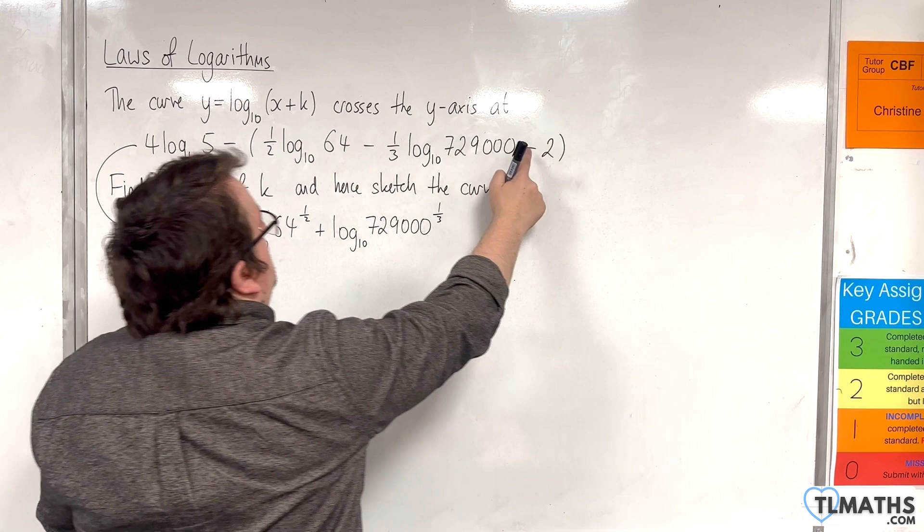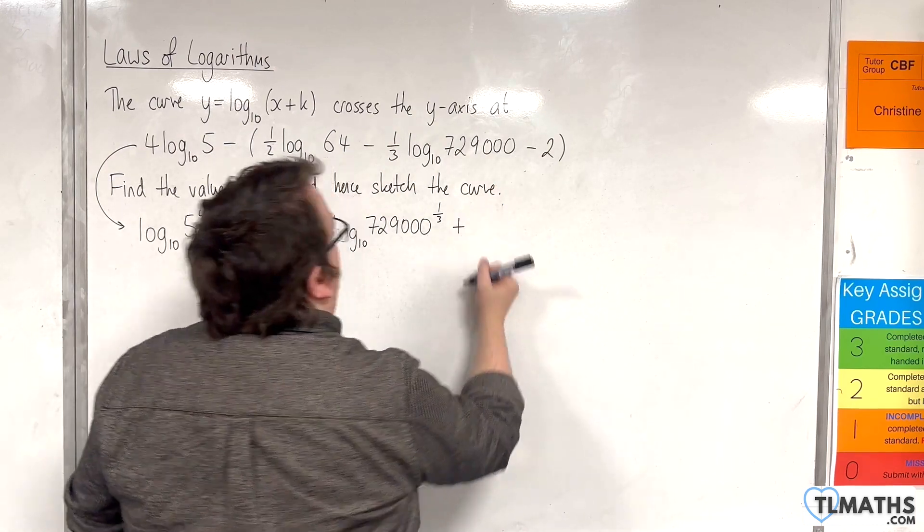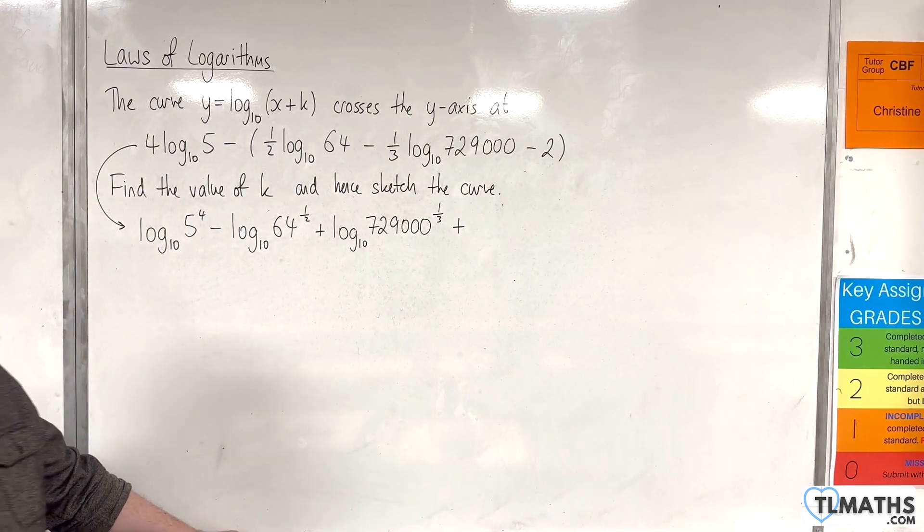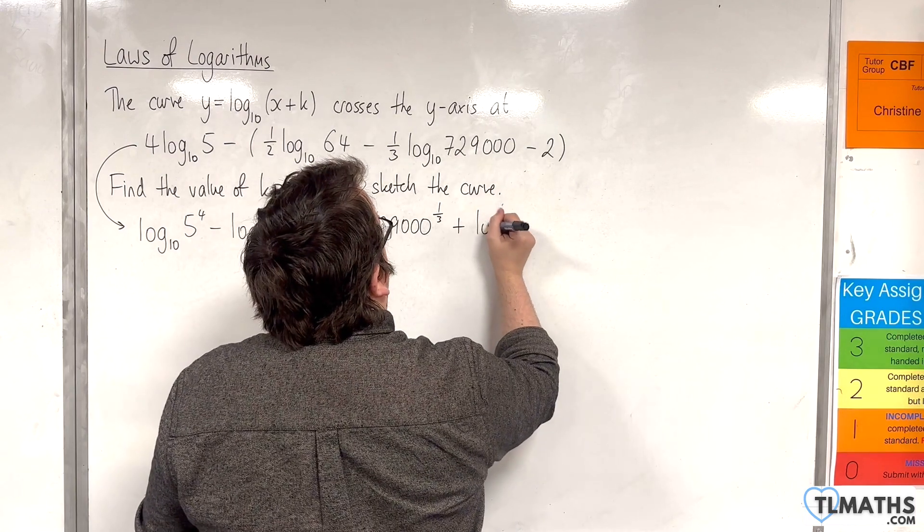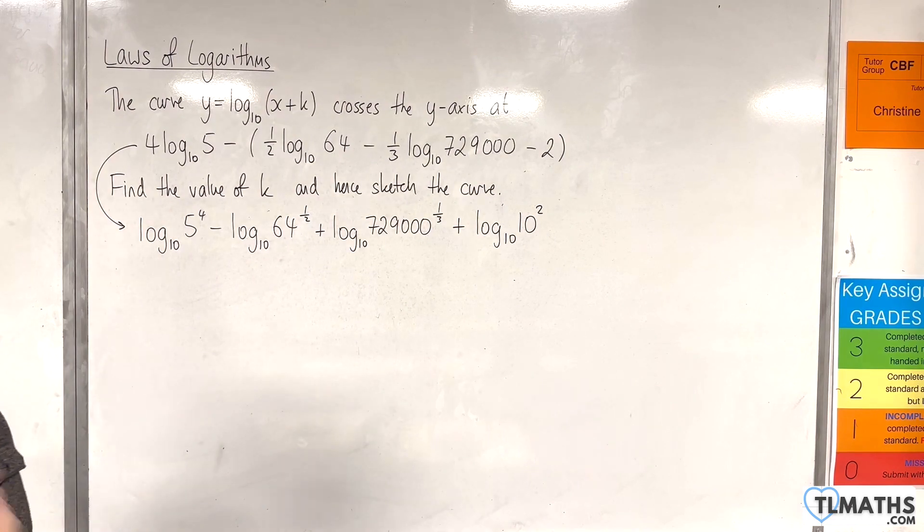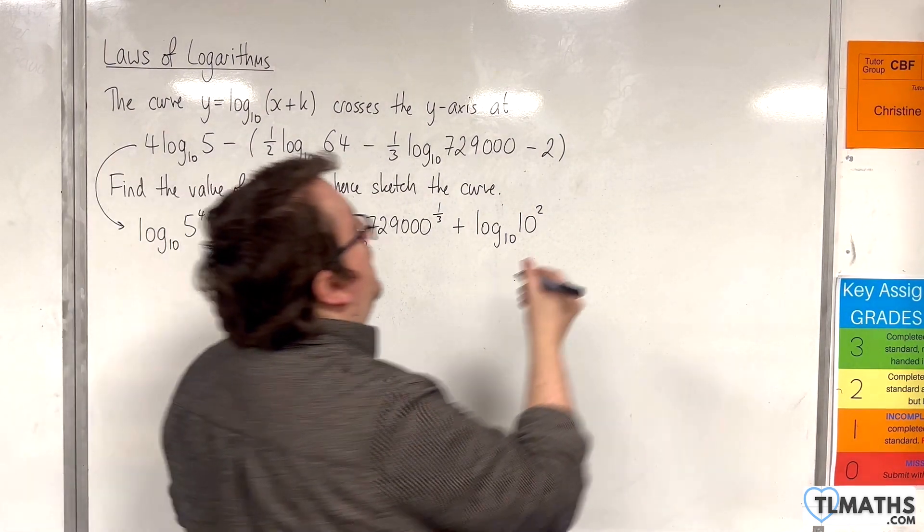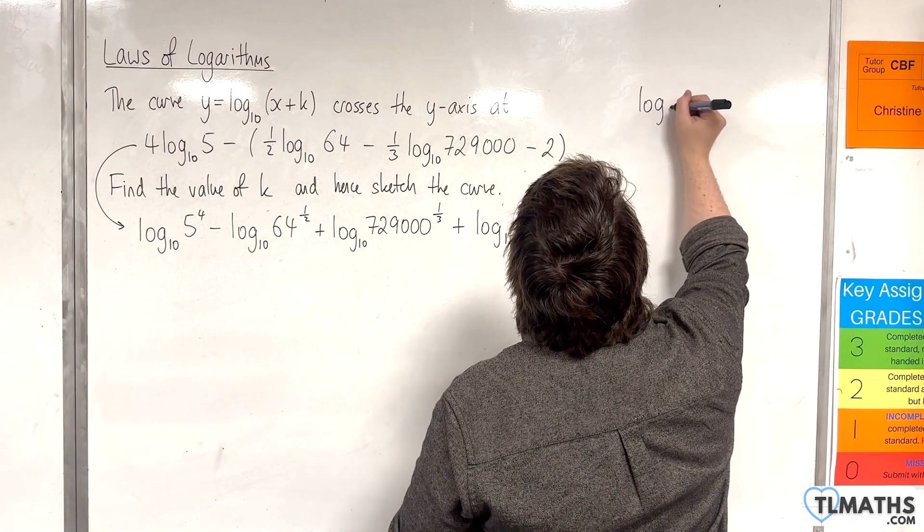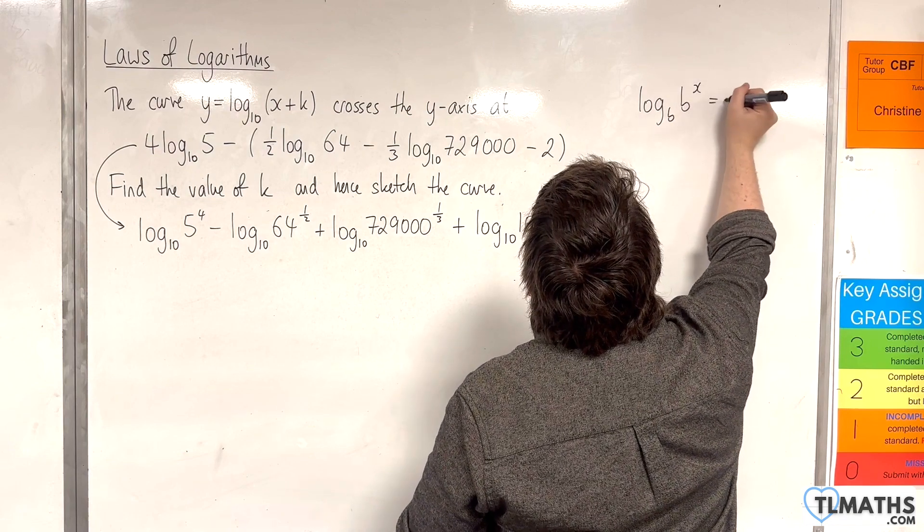Then take away minus 2, so plus, and the 2 I can write as log base 10 of 10 squared. So that's utilizing, remember, log base B of B to the X is X.